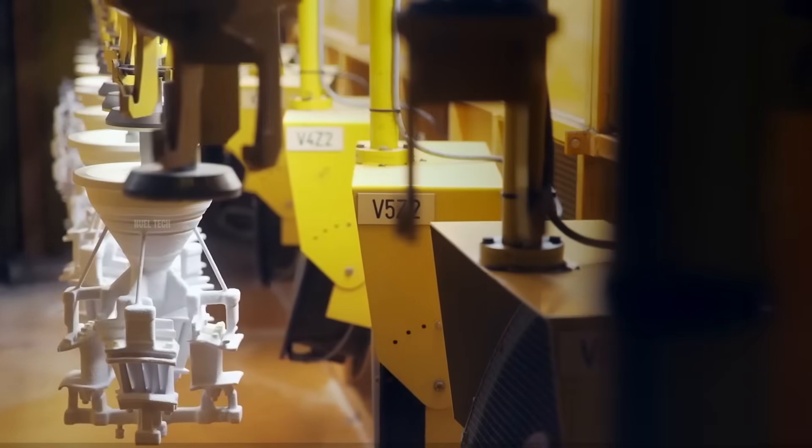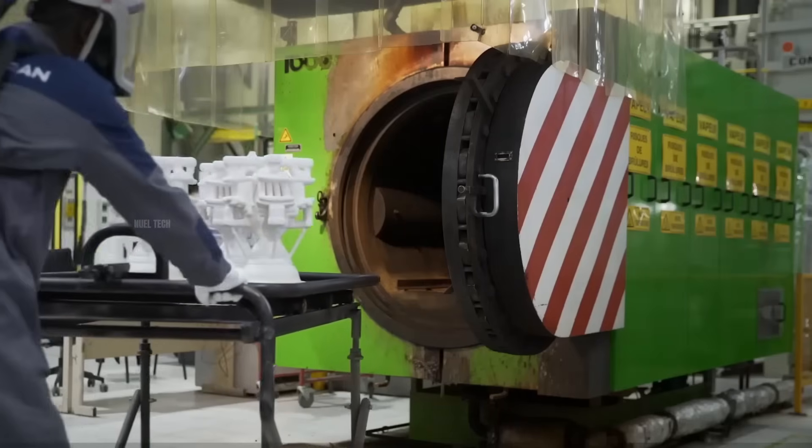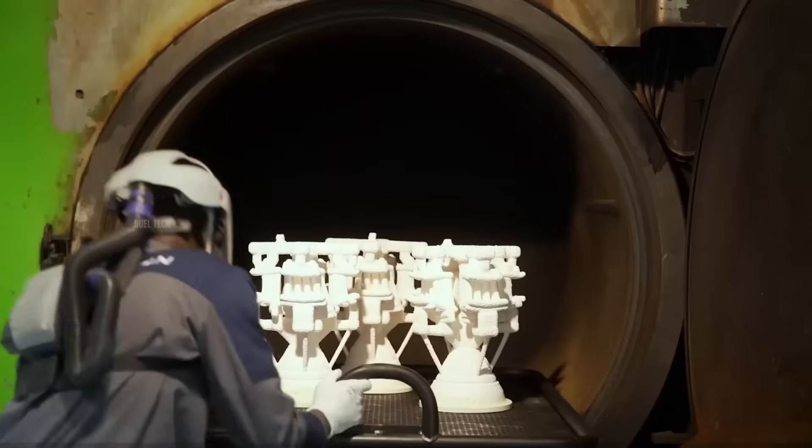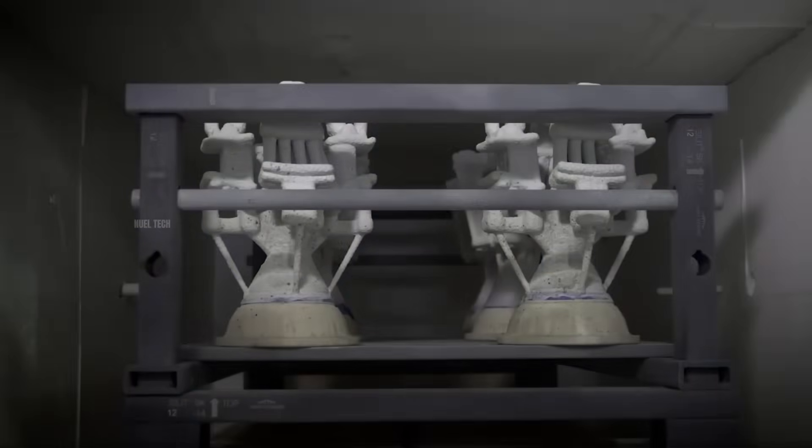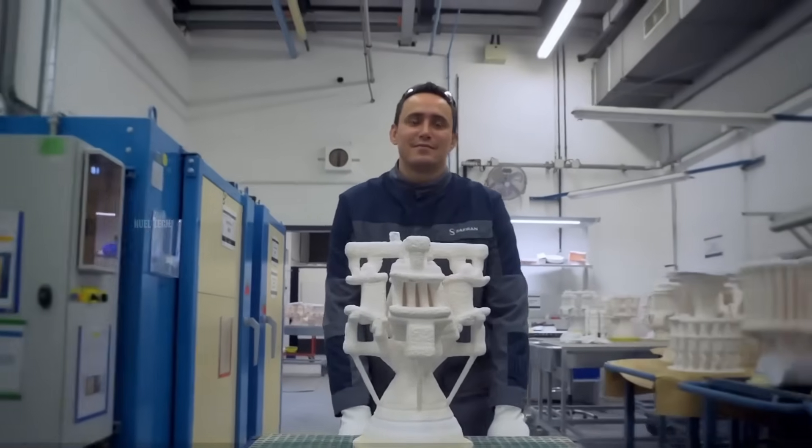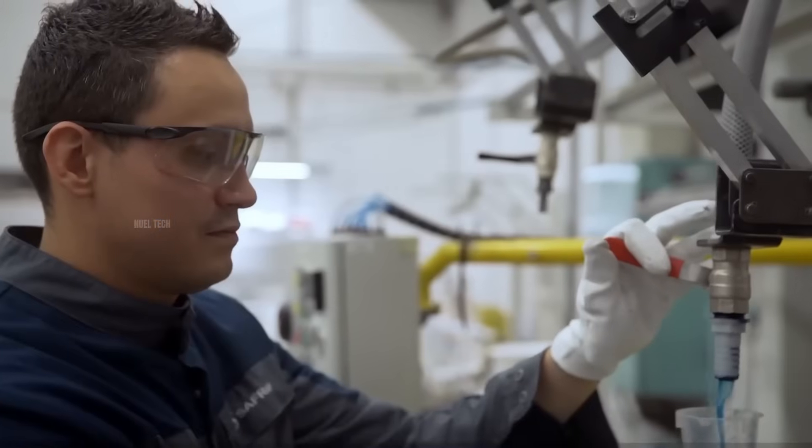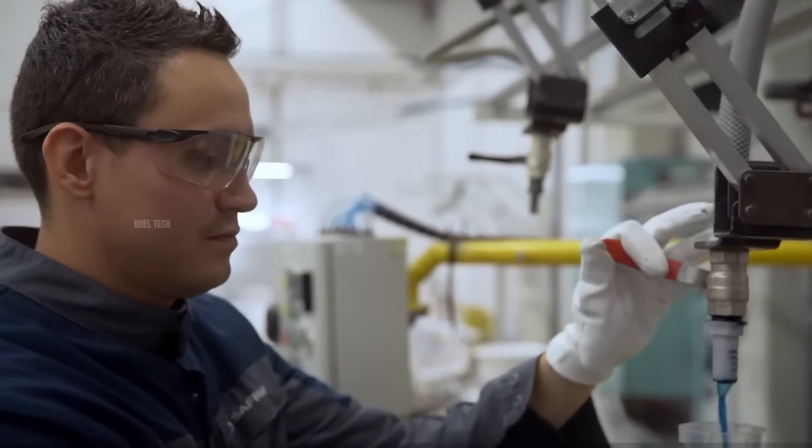Once dry, the wax inside is removed by heating it in an autoclave, a high-pressure chamber, to prevent cracking of the ceramic shell caused by wax expansion. The empty mold is then inspected again using a special blue dye to detect any cracks or leaks.